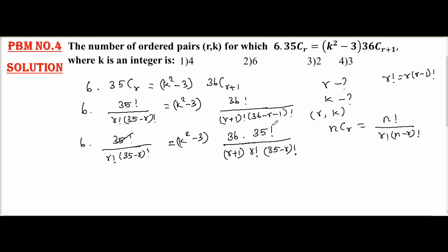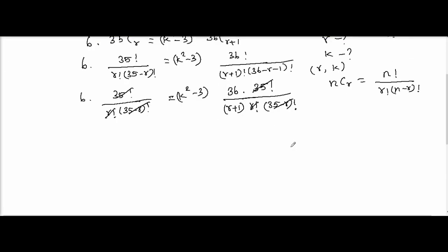So both sides I can cancel 35 factorial, r factorial and 35 minus r factorial. Therefore we get 6 equal k square minus 3 into 36 by r plus 1. So we can cancel 6 and 36. So that gives me k square minus 3 equal r plus 1 by 6. So that I can say k square equal r plus 1 by 6 plus 3.